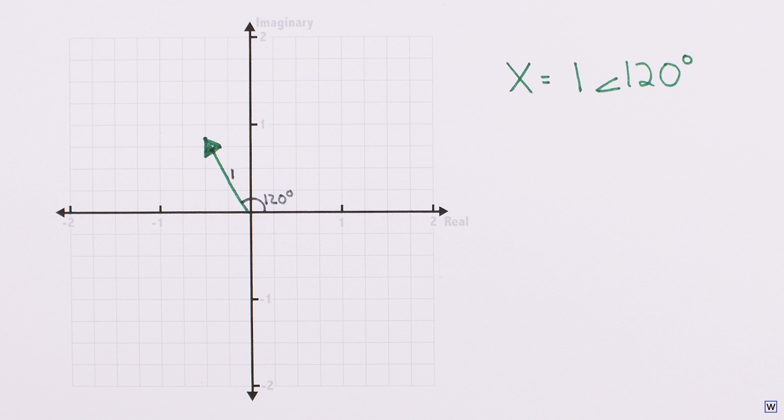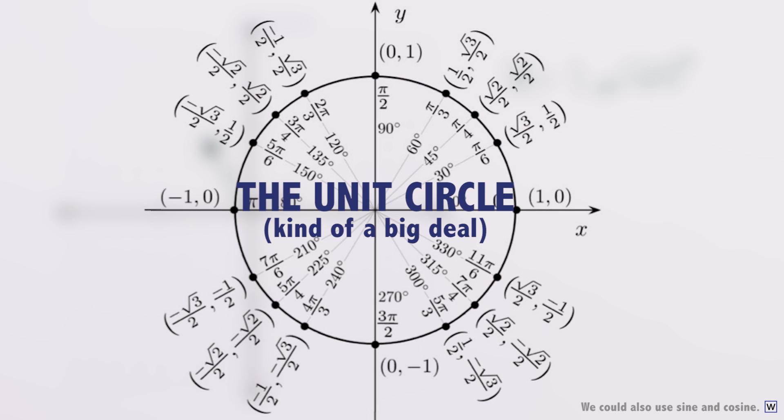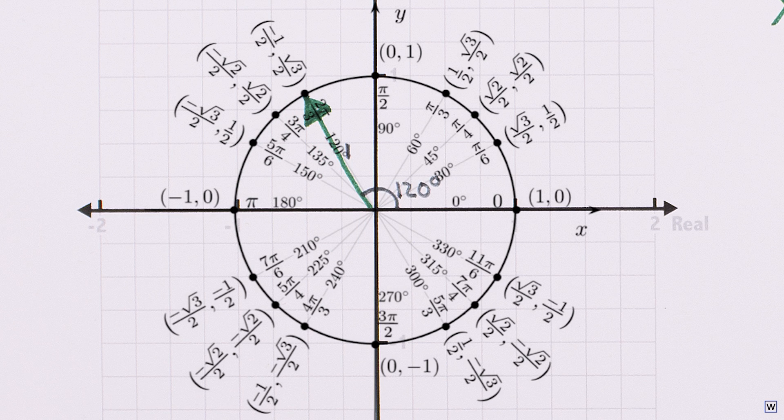This may seem like a strange answer for algebra class, so let's put it back in rectangular form. Our good friend the unit circle can save us some time here. We would like to know the rectangular coordinates of a point on the unit circle at an angle of 120 degrees. According to the unit circle, our answer is minus 1 half for the real part, and root 3 over 2 for the imaginary part.